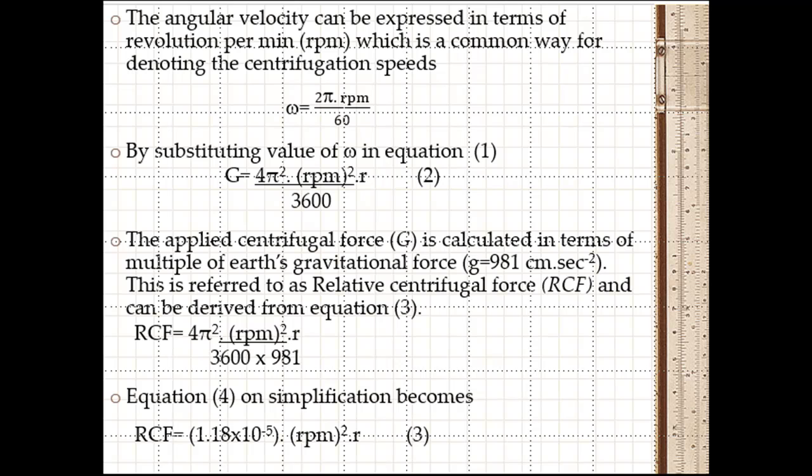G = 4π² × (RPM)² × r / 3600. The applied centrifugal force is calculated in terms of multiple of Earth's gravitational force, g = 981 cm/sec². This is referred as relative centrifugal force (RCF) and can be derived from equation 3. RCF = 4π² × (RPM)² × r / (3600 × 981).